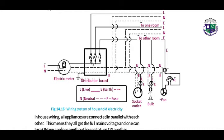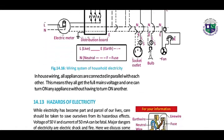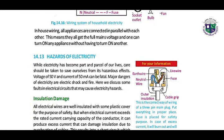You have to observe all this — here we have our electric meter, our distribution board, connections going to one room, to other rooms, and to other terminals: socket outlet, bulb, fan. You have to understand and draw it again and again. In house wiring, all appliances are connected in parallel with each other. This means they all get the full mains voltage and no one has to turn on any other appliance to use one.